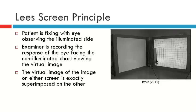So how does the Lee Screen actually work? The patient is fixing with the eye that's observing the illuminated side. If we look at this particular example, when the patient has their chin on the chin rest, the right eye will be fixing on the illuminated side. The examiner will then point to one element on the tangent screen. For instance, they commence with the primary position and they'll point with their pointer at this specific position.